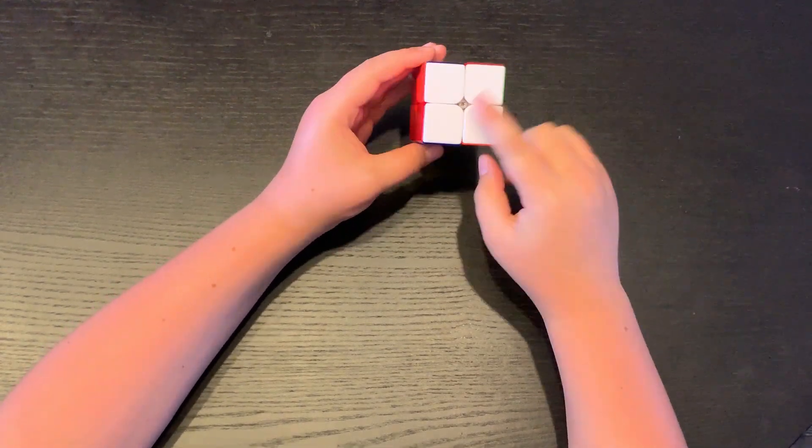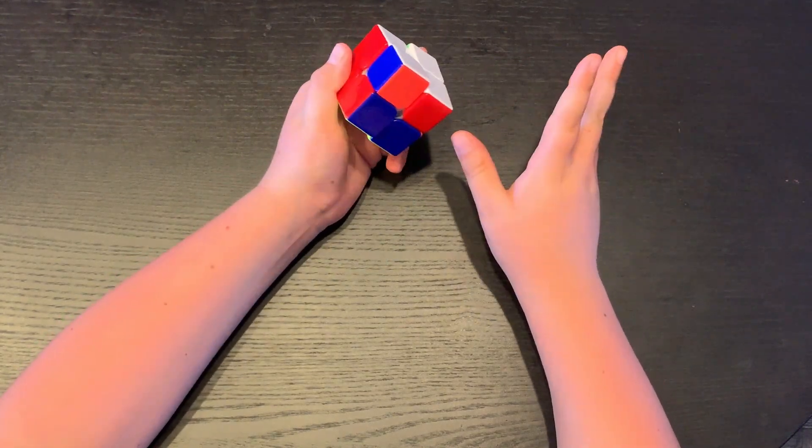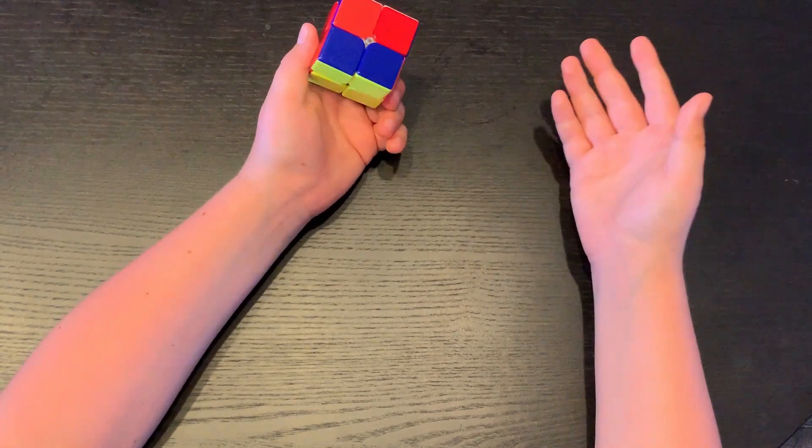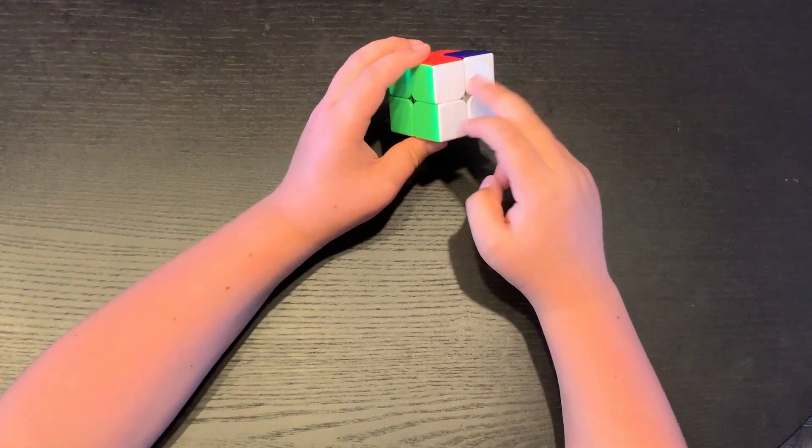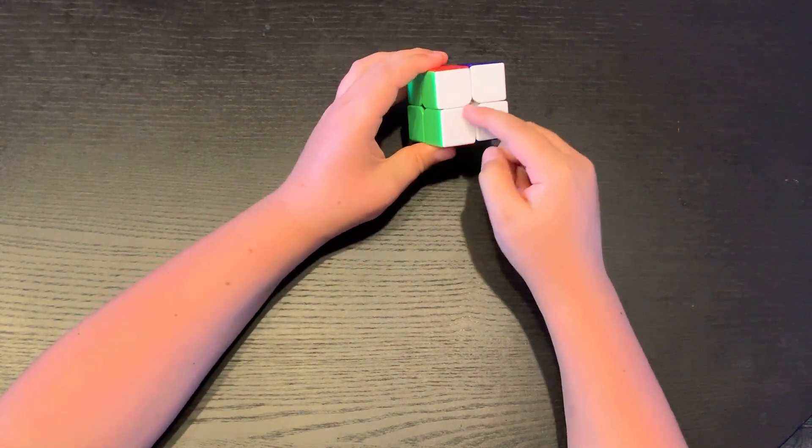And it makes your top layer. Then you might just have a T perm. So a T perm is a PLL algorithm or a permutation of the last layer when you have these two corners solved, but these need to be switched. And on a three it's different because you have to switch these two edges and then these two corners.